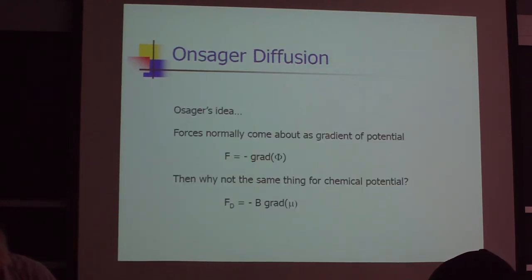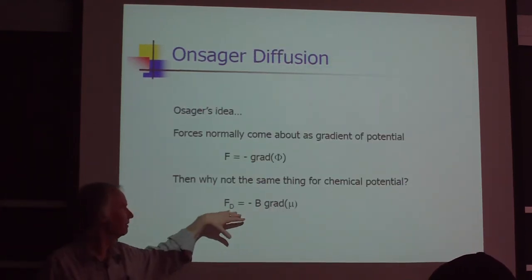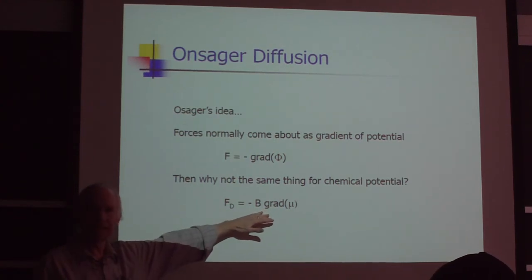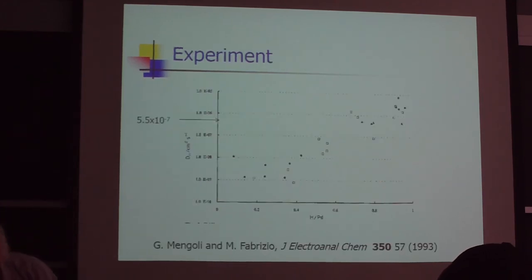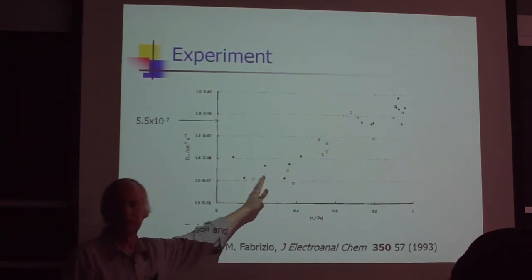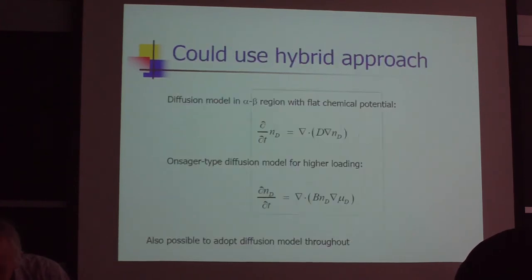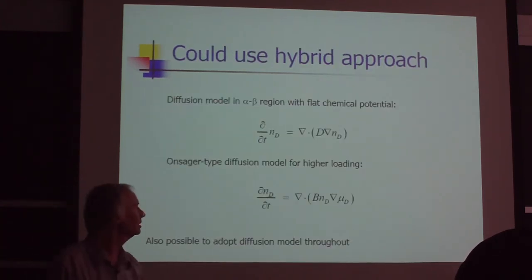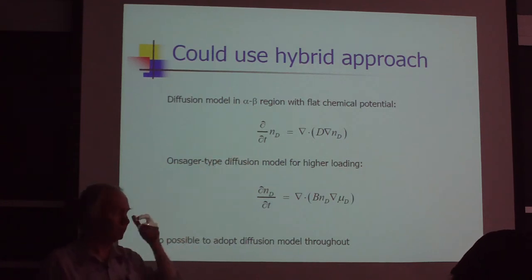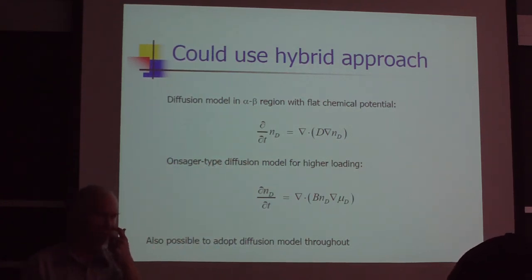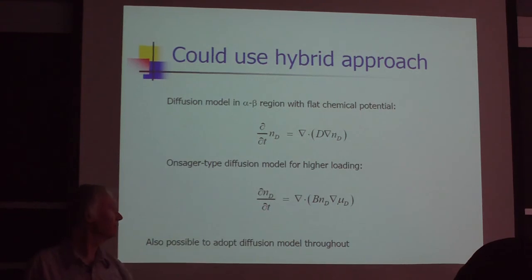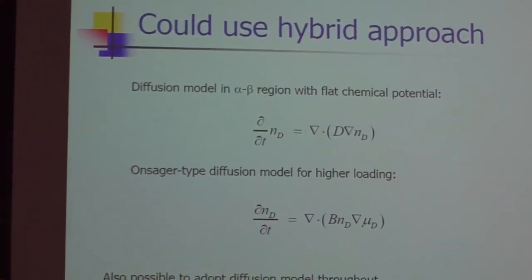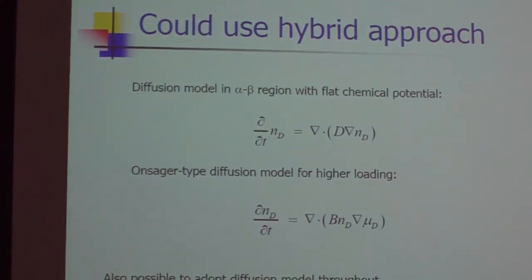So as a result, in the miscibility gap, it's very difficult to get a gradient in the chemical potential. So if Onsager's right, then the diffusion in the miscibility gap in the two-phase region will be very small. And that seems to be consistent with the data from Mencoli's experiment. One approach is to use a diffusion model in the alpha-beta region and use an Onsager type model in the miscibility gap.